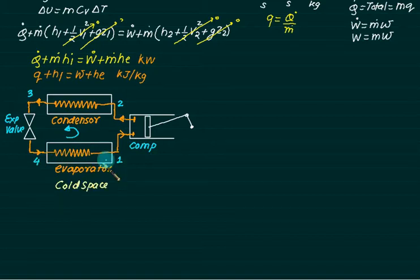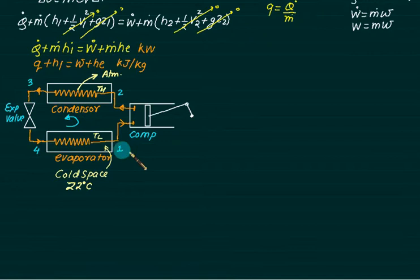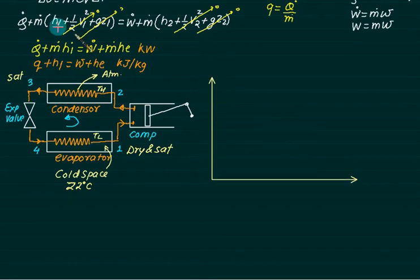The evaporator is normally passed through the cold space. Heat is taken from the cold space at temperature equal to TL. The condenser is maintained at temperature TH. Entry to the condenser is maintained at dry saturated, and at point number three, that is inlet to the expansion valve, we have to make the saturated liquid.